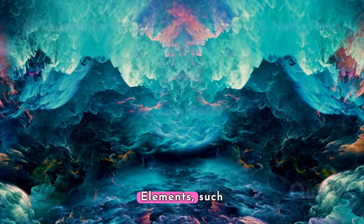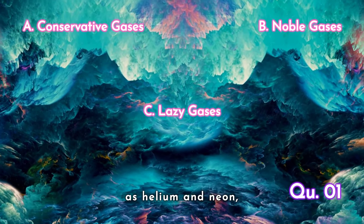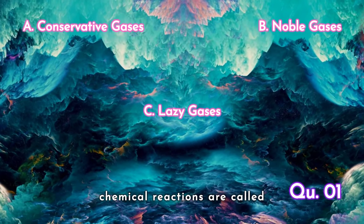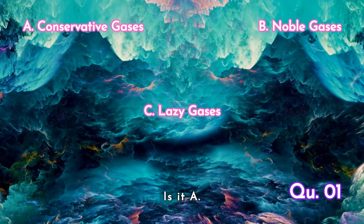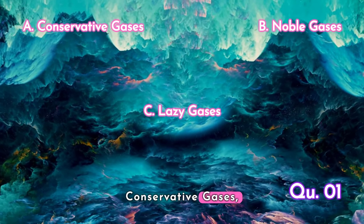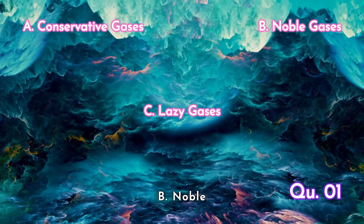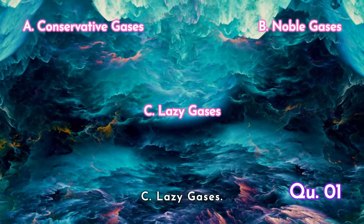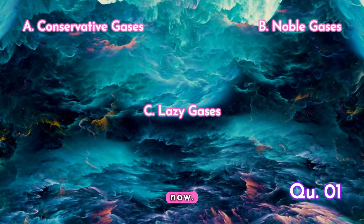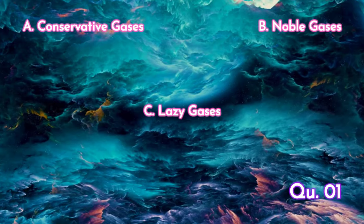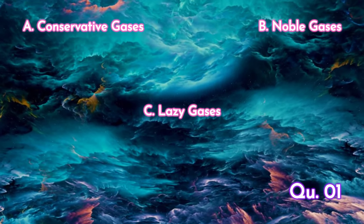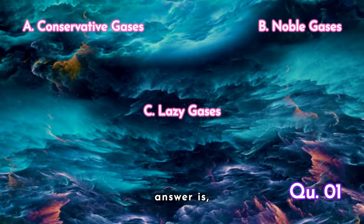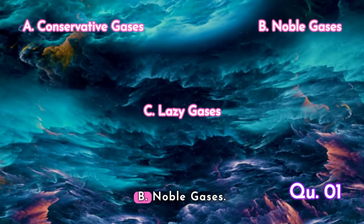Question 1. Elements such as helium and neon that tend to not undergo chemical reactions are called what? Is it A, conservative gases? B, noble gases? Or C, lazy gases? Your time starts now! The answer is B, noble gases.